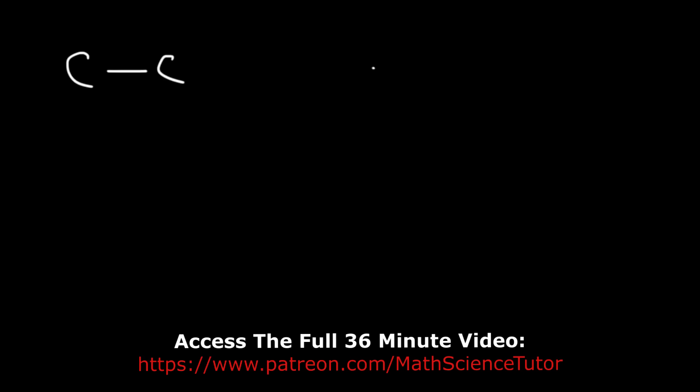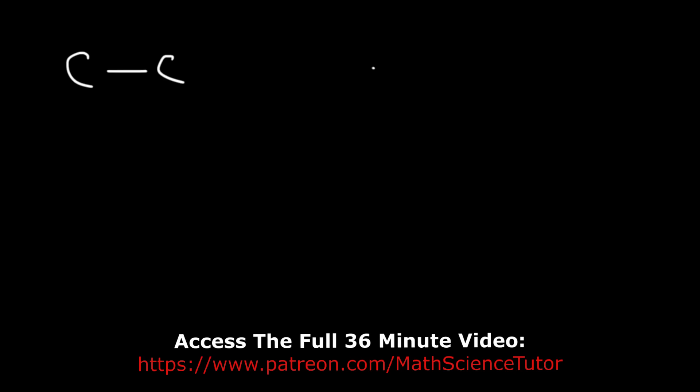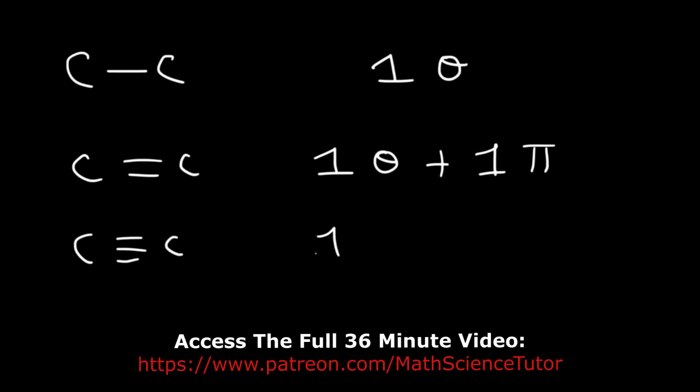Every single bond contains one sigma bond. Every double bond has one sigma and one pi bond. A triple bond contains one sigma and two pi bonds.